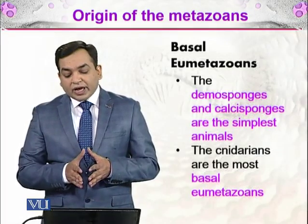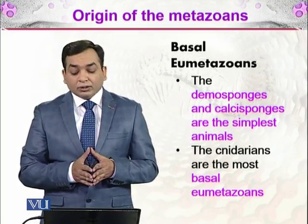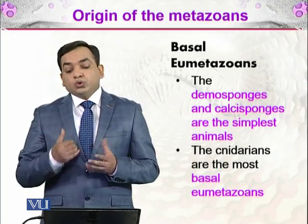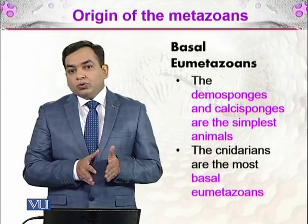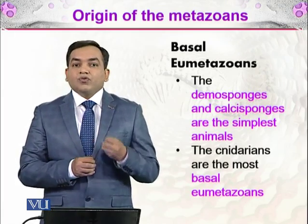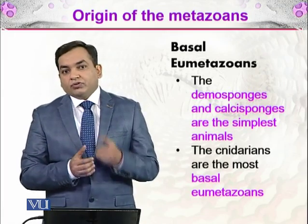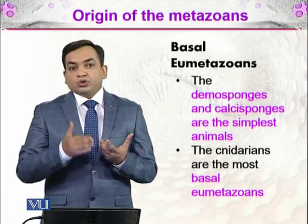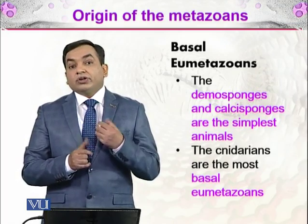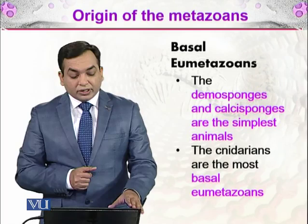The demo sponges and calcium sponges are the simplest organisms, as discussed earlier. The cnidarians are the most basal eumetazoans. Eumetazoan means these are the first true animals which were formed, because they have some degree of motility as compared to the demo sponges and calcium sponges.